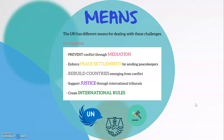For instance, it can prevent conflict through mediation. It can enforce peace settlements by sending peacekeepers — we already talked about peacekeepers last time briefly. It can rebuild countries emerging from conflict. It can support justice through international tribunals, and it can create international rules — for example, on conduct during war, war crimes, arms control, and so on.